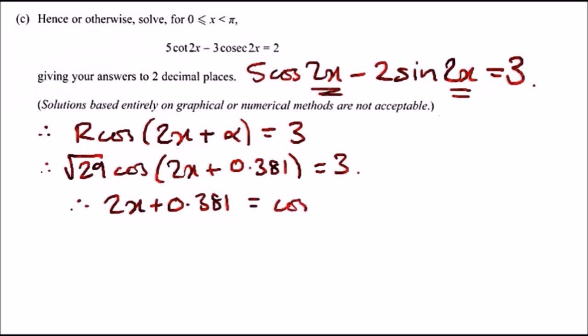Equals the cos inverse of 3 over root 29. If you enter this in the calculator, remember to always keep your solutions in radians. You should get a solution of 0.9799. Therefore, all of this expression here, 2x plus 0.381, should equal, two decimal places, 0.98 radians. So that's our first solution.